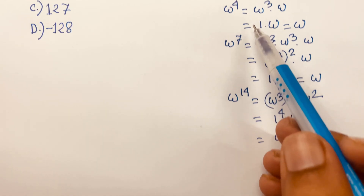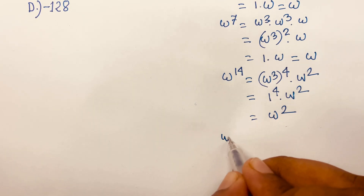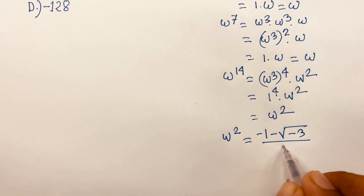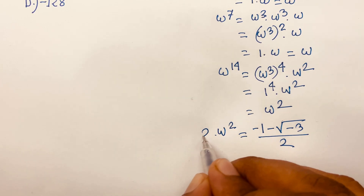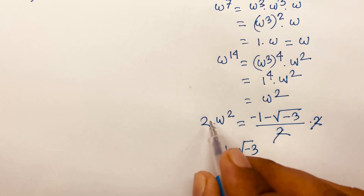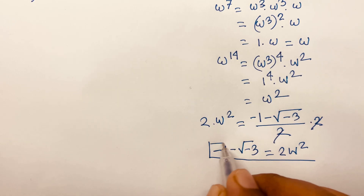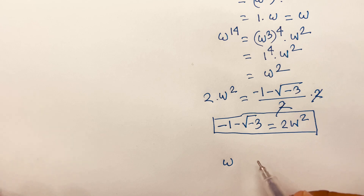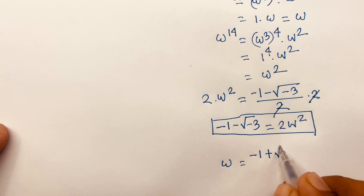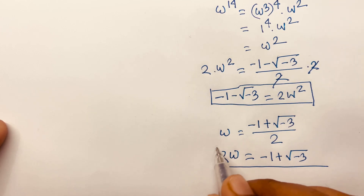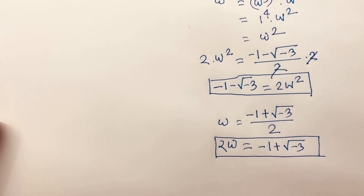We find that omega power 3 equals 1. The value of omega squared is (-1 - √(-3)) / 2. If I multiply both sides by 2, then -1 - √(-3) = 2ω². Also, omega equals (-1 + √(-3)) / 2, so multiplying both sides by 2 gives -1 + √(-3) = 2ω.